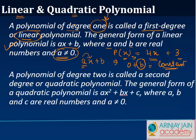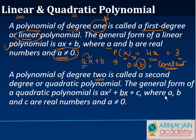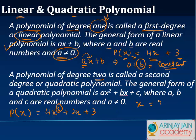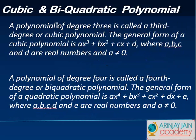A polynomial of degree two is called a second-degree or quadratic polynomial. The general form is ax² + bx + c, where a, b, and c are real numbers and a ≠ 0. For example, p(x) = 4x² + 2x + 3 — the highest degree of the variable x is two, so this is a quadratic or second-degree polynomial.